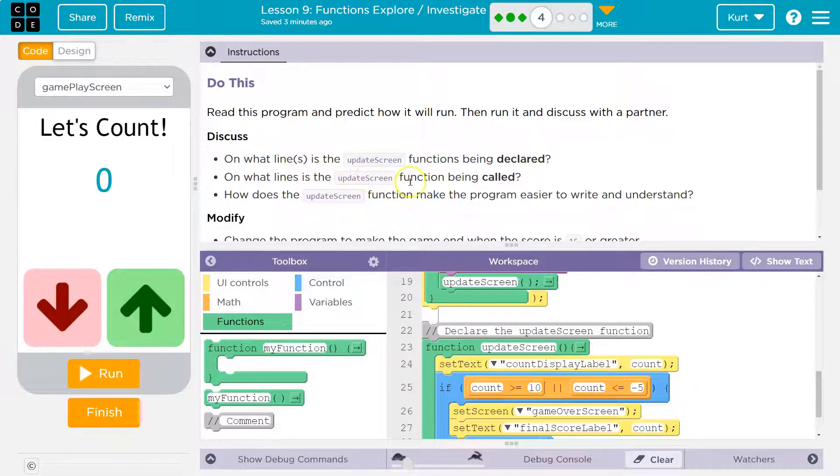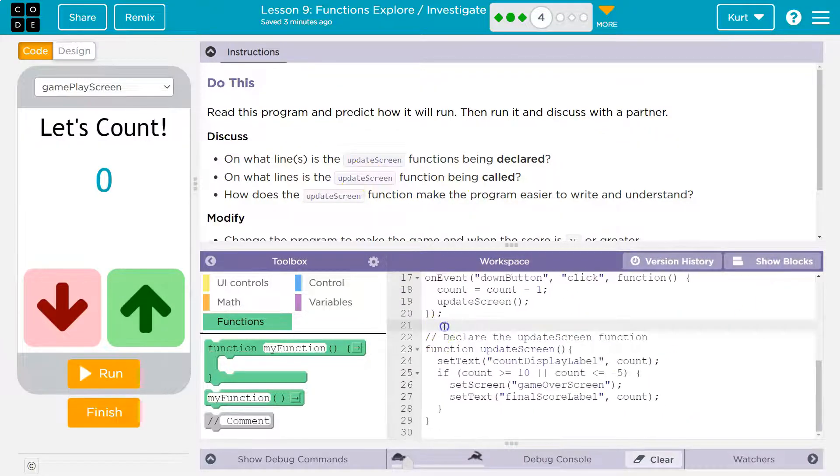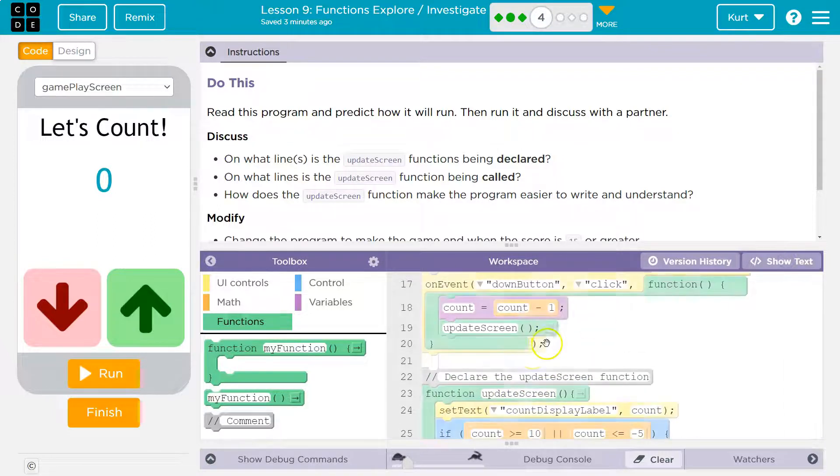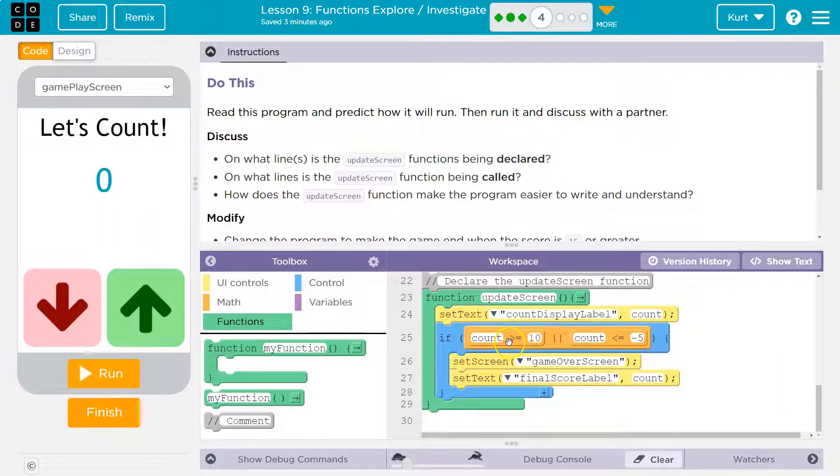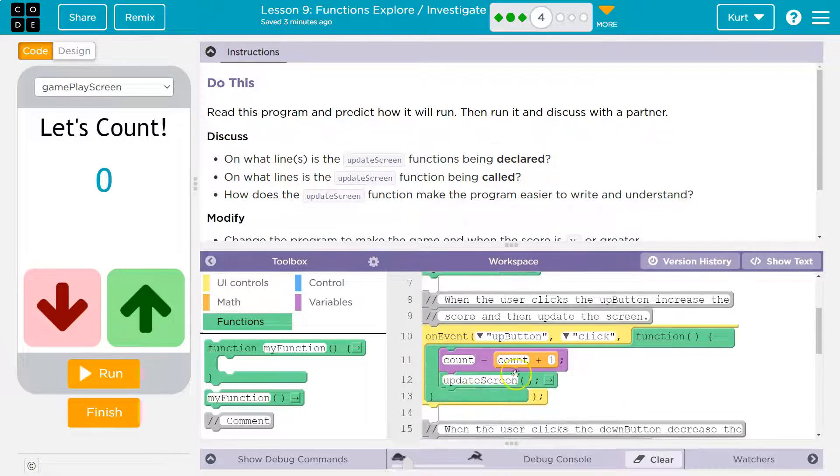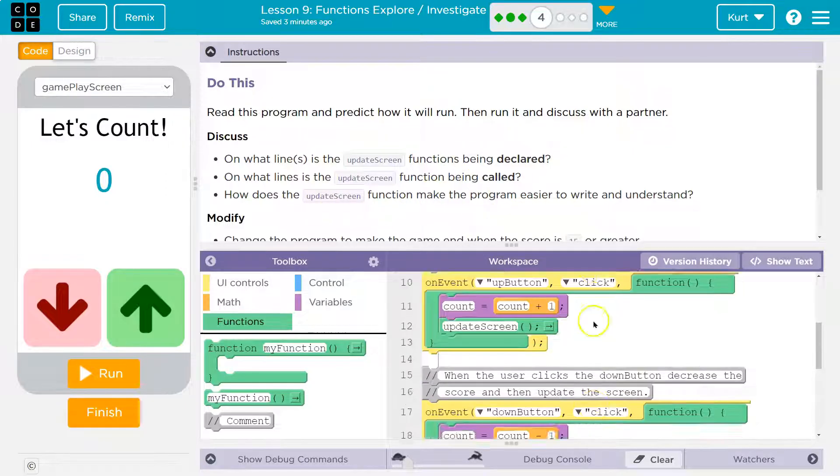Okay, on what lines is it being called? Well, what I just showed you is how you call a function. That's when you call out its name, right? This would be calling out its name. So let's look. Is it down here? Nope. We're looking for update. Oh, there's one update screen, right? There's no parentheses. It's just using the name to make it work.